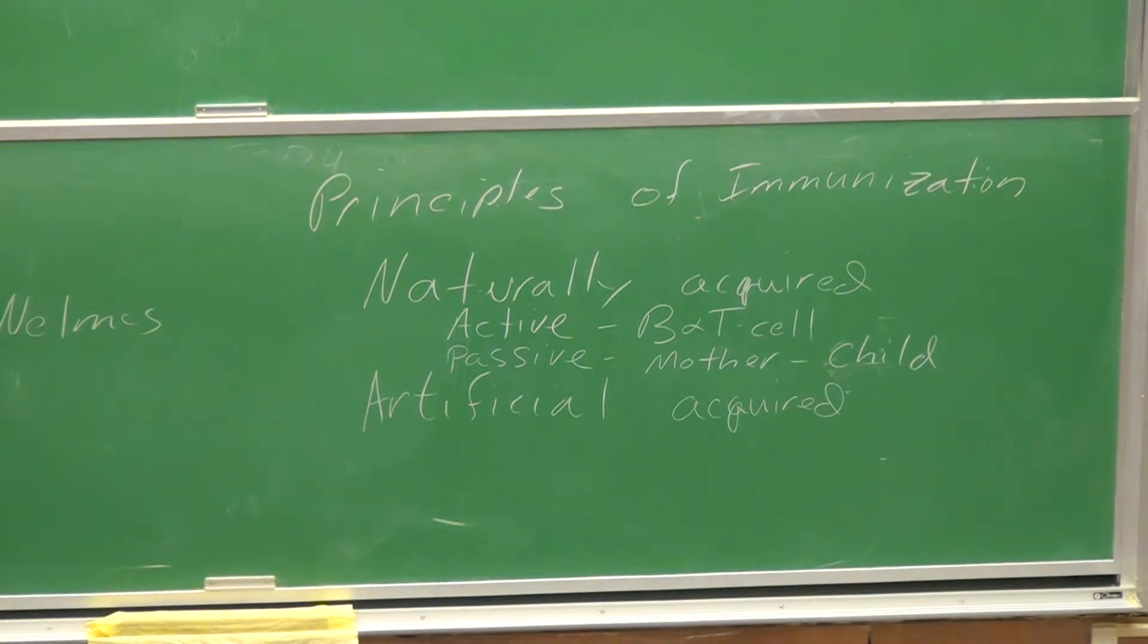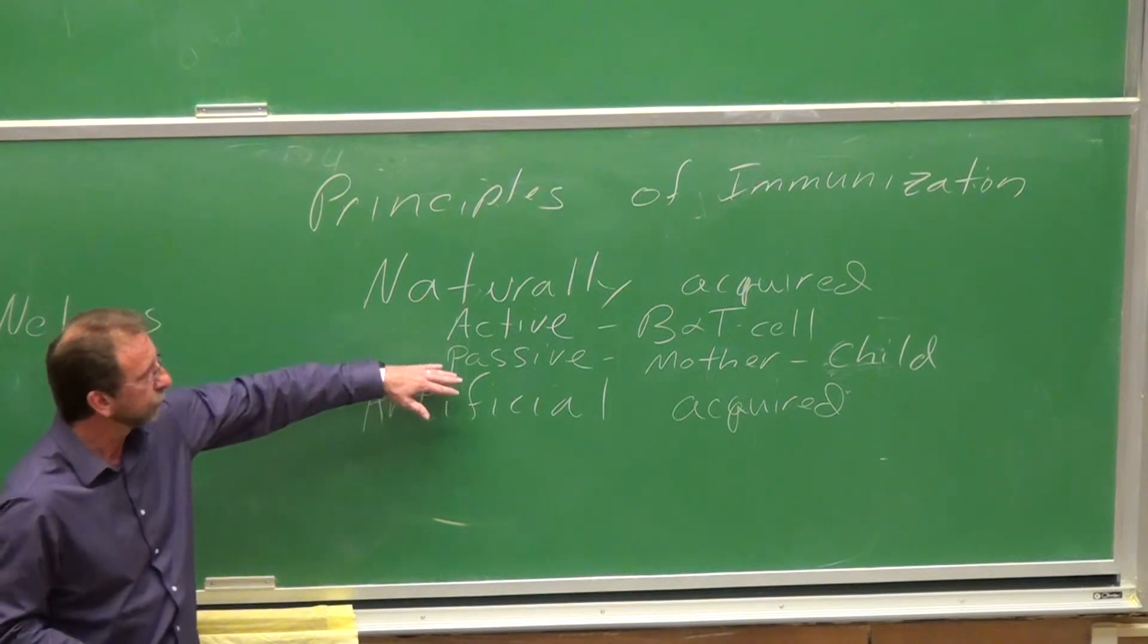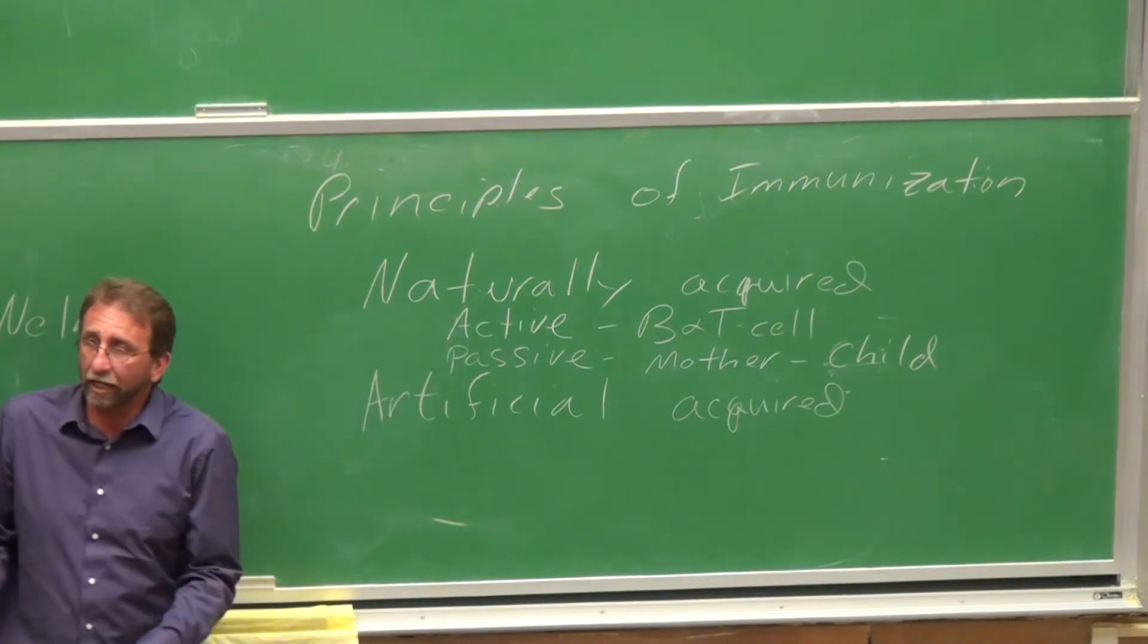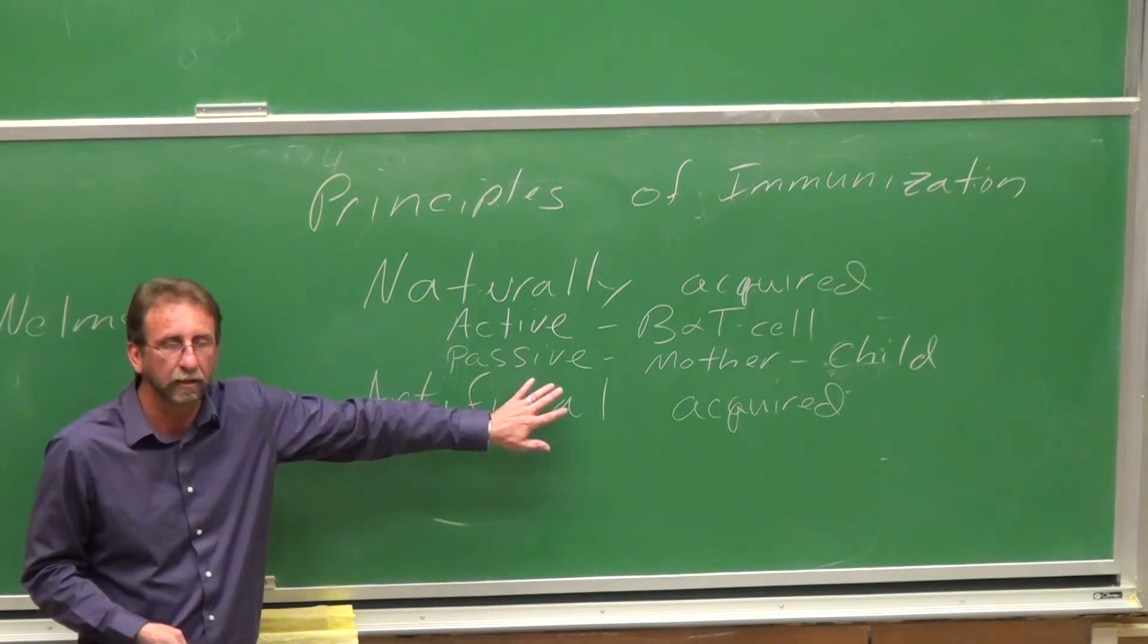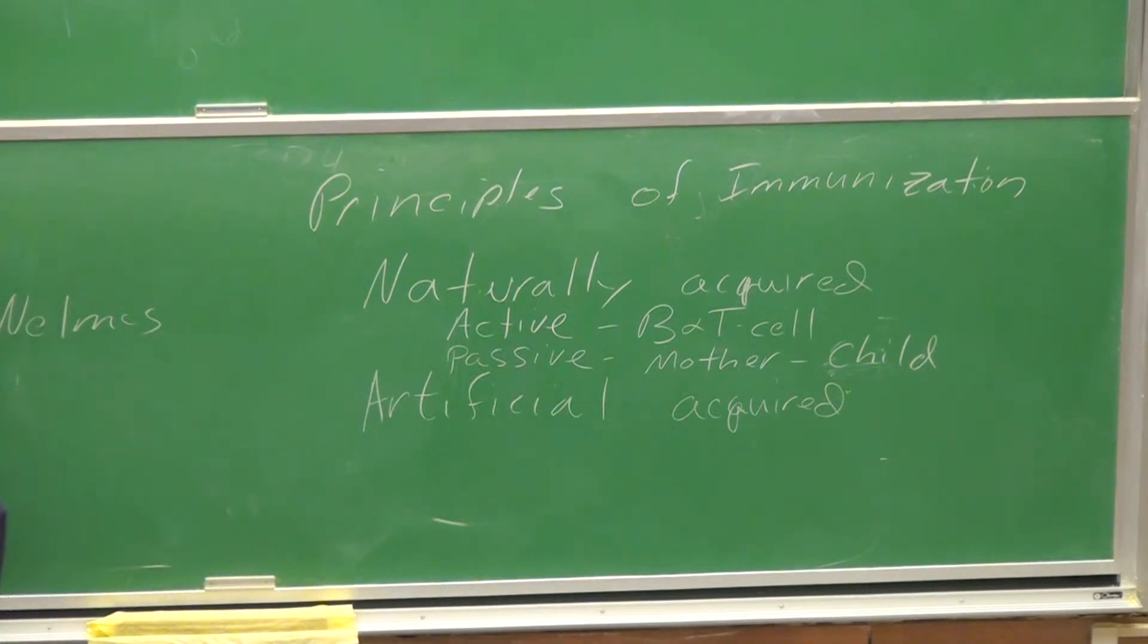So during pregnancy and shortly after birth, antibodies that the mother has been producing can cross the placenta and serve to protect the fetus. And then after the child is born, antibodies in the mother's milk can serve to protect the child against disease.